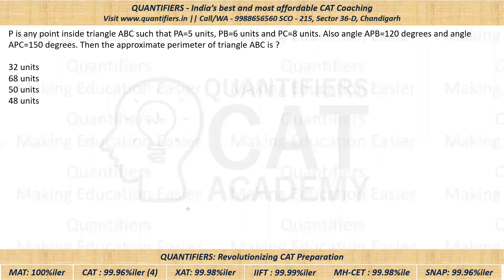The question states: P is any point inside triangle ABC such that PA = 5, PB = 6, PC = 8. We know angle APB = 120° and angle APC = 150°. We have to find the perimeter of triangle ABC. The options are also given.